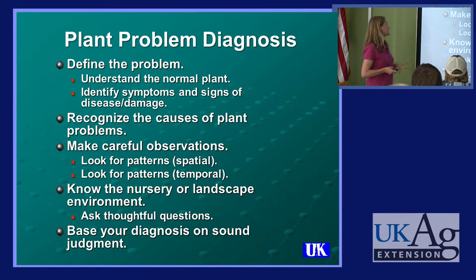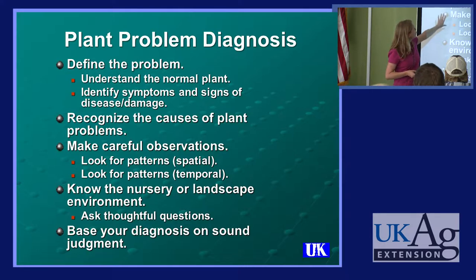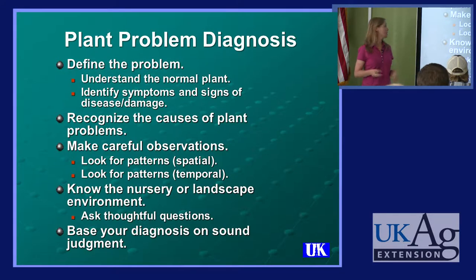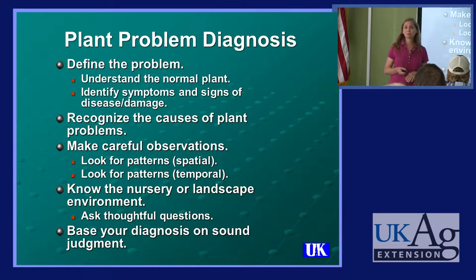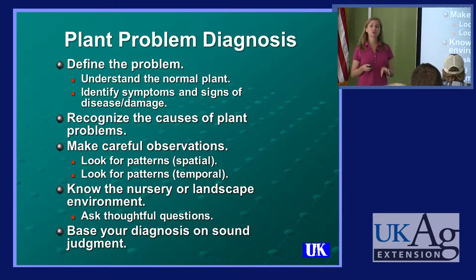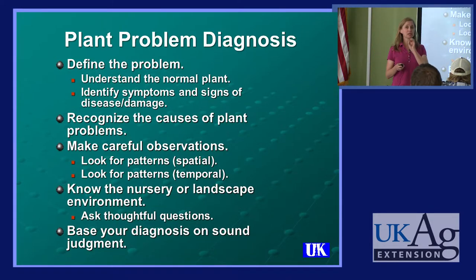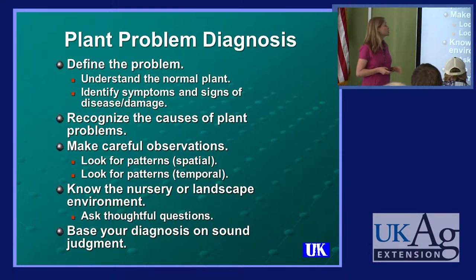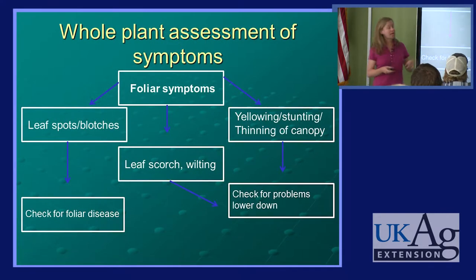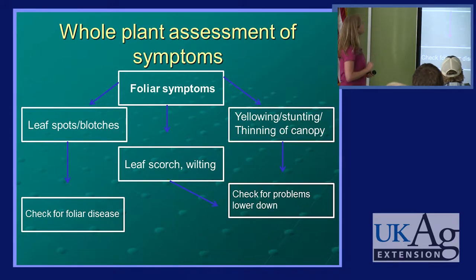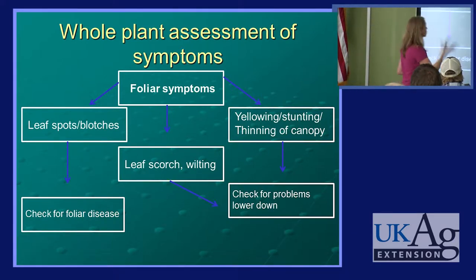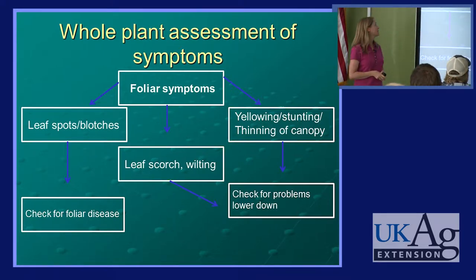We want to look not only at the symptoms and signs, but at patterns we see in the landscape or nursery setting, because that can very often tell us a whole lot about what's going on. We also want to look for patterns that occur over time — very important for identifying diseases and differentiating between infectious problems and disorders or nutritional/environmental problems. I drew up a little flow chart because I think it's a helpful way to orient yourself when going through this diagnostic process, because we really want to look at the whole plant.